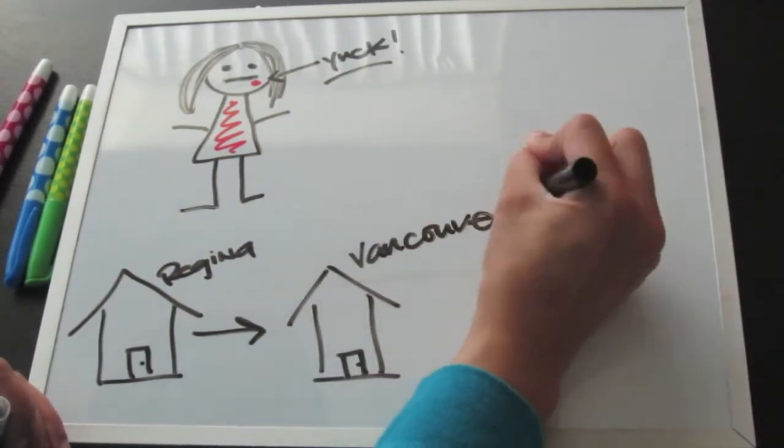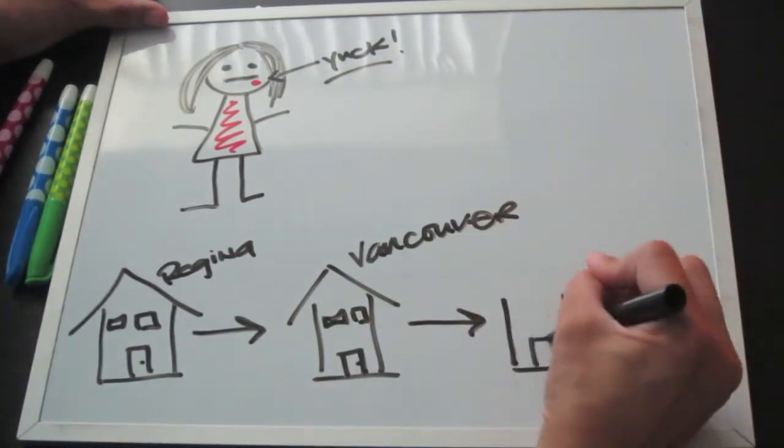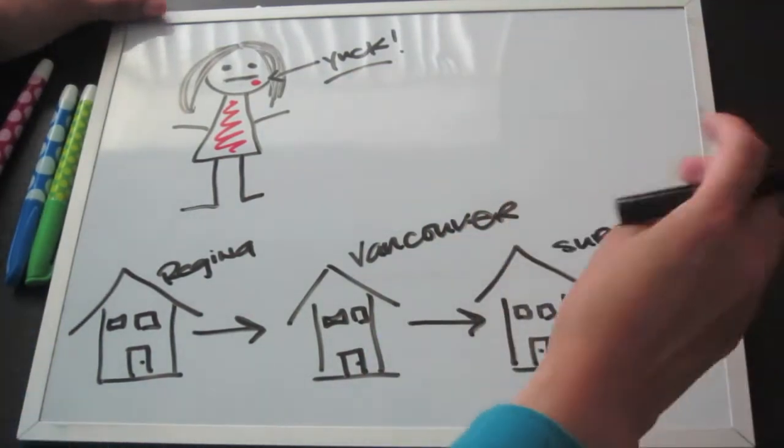And two, we moved around a lot. We started in Regina, we moved over to Vancouver BC, and we finally settled in Delta BC.